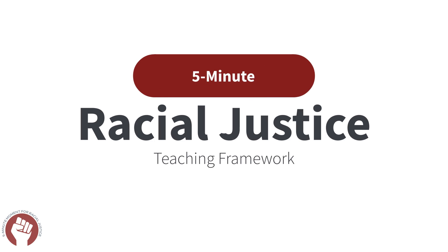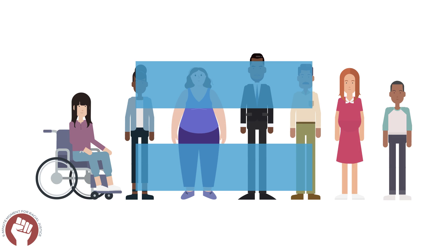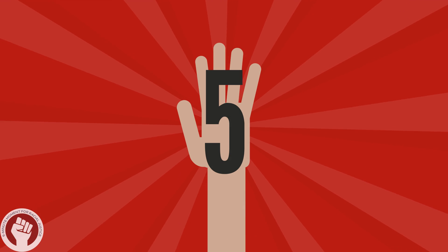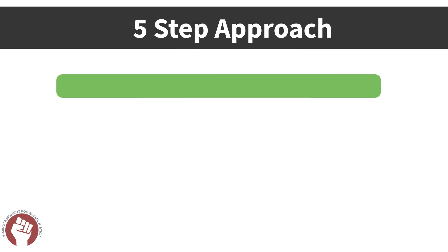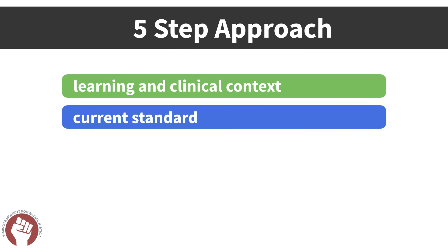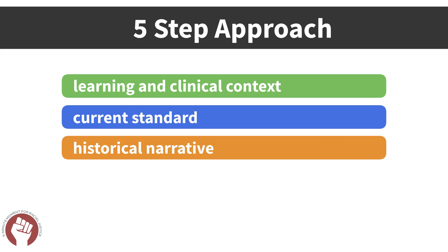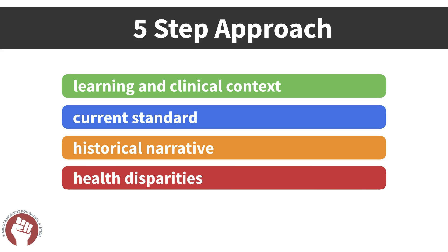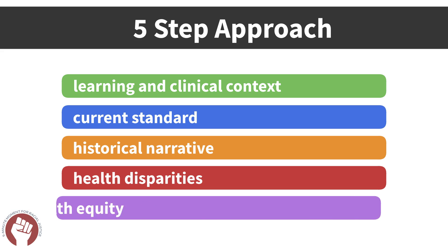The 5-Minute Moment for Racial Justice is a teaching framework to promote health equity and racial justice in medical education. The framework relies on a five-step approach that discusses the learning and clinical context, the current standard of a medical diagnostic or treatment, the historical roots and bias of that standard, and contributions to health disparities.